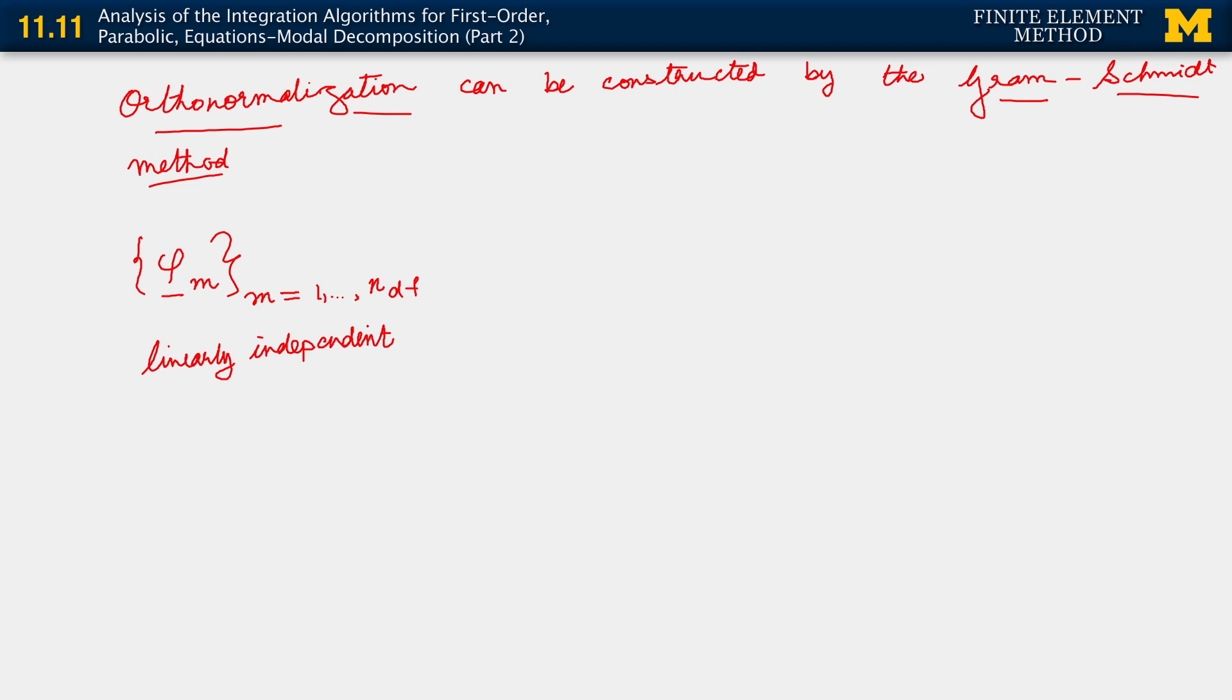Why do we know that the eigenvectors that we get by solving that generalized eigenvalue problem are going to be linearly independent? That's right, it's because k and m are both positive definite. That's what guarantees the existence of linearly independent eigenvectors.